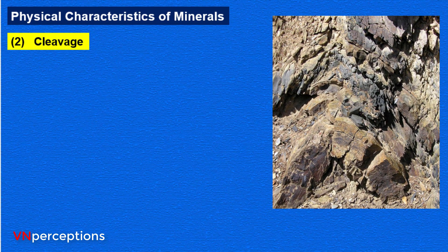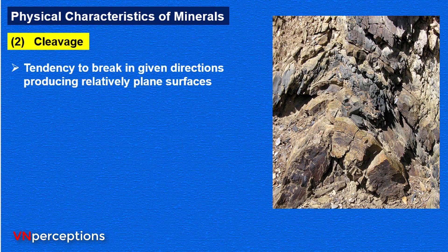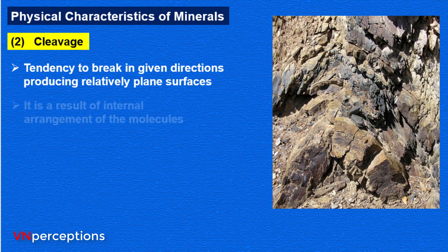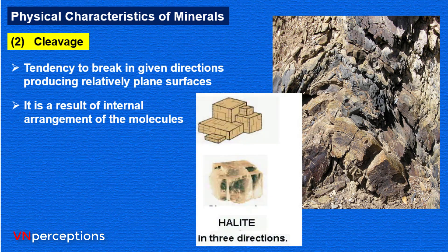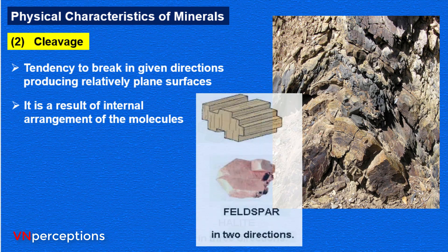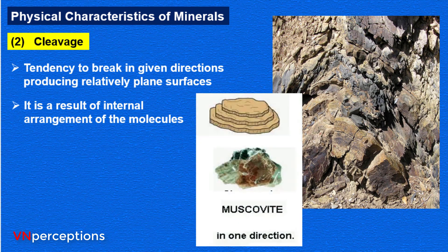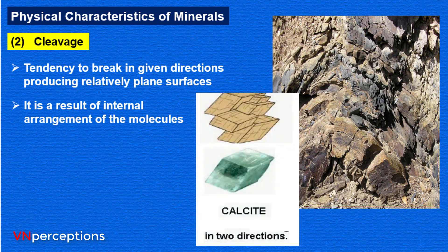The next property is cleavage — the tendency to break in a given direction, producing a relatively plain surface. It is actually a result of the internal arrangement of molecules. These minerals may cleave in one or more directions and at any angle to each other. For example, halite will split in three directions, feldspar in two, muscovite in one direction, and calcite in two directions.